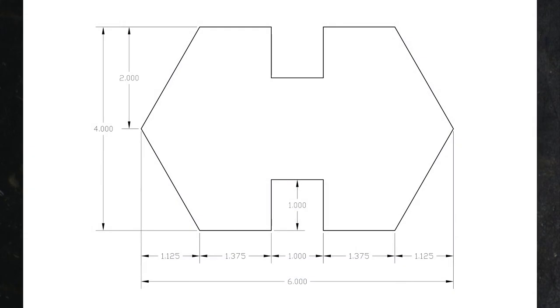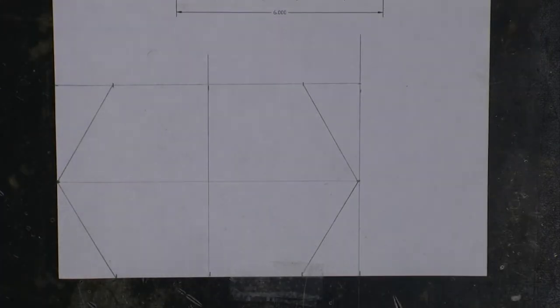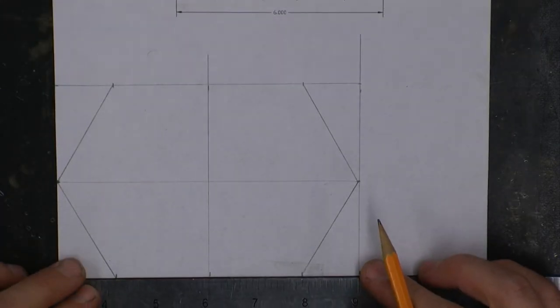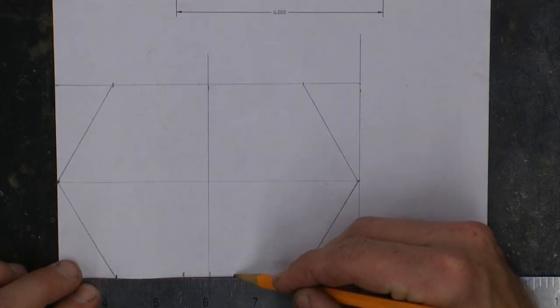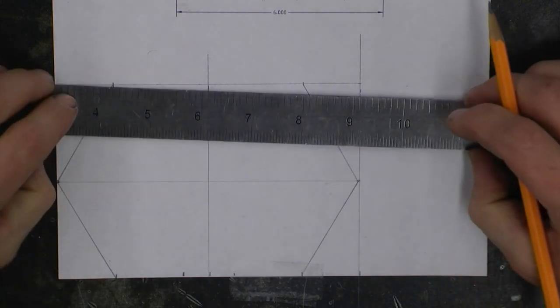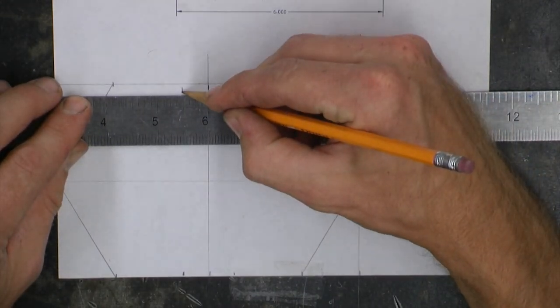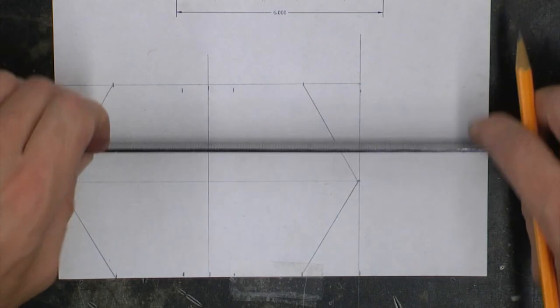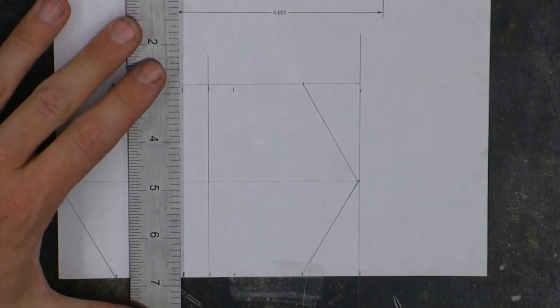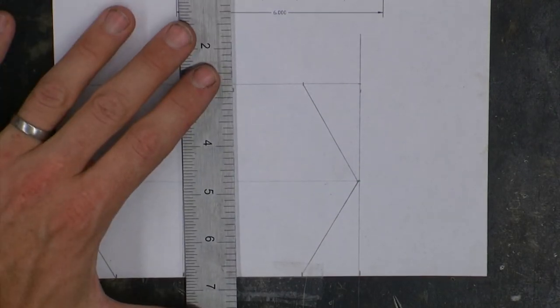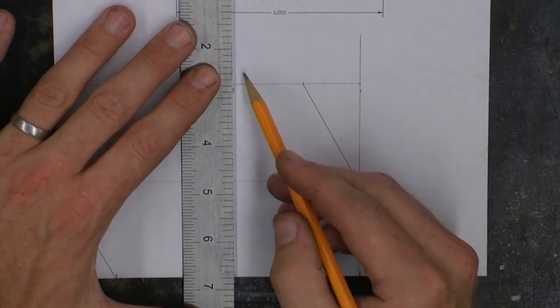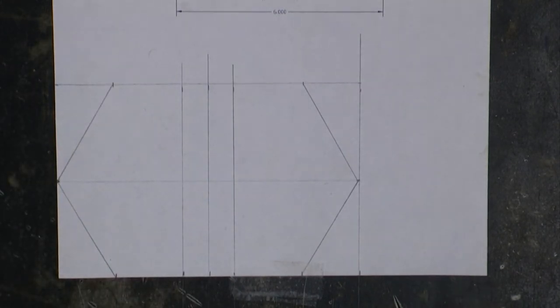Looking back at our drawing, we can see that this indented portion is 1 inch wide. I can use that measurement, split the difference, and go a half inch on either side of my center reference line. Connecting those together then gives me some reference lines for the left most and right most line of that indention.